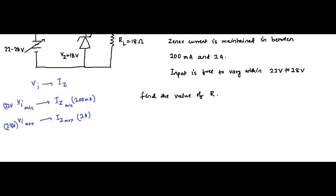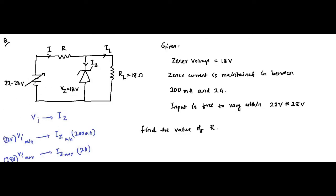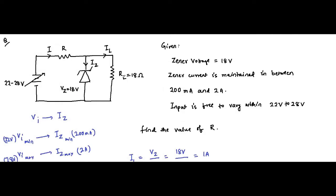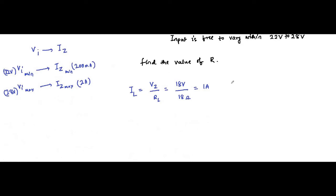The load current flowing through the load resistance is fixed. I_L equals V_Z divided by R_L, which equals 18 volts divided by 18 ohms, which equals 1 ampere. This load current is always fixed.